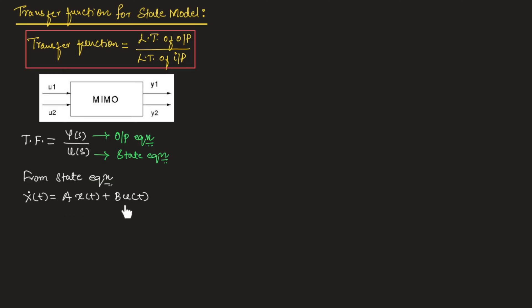If we take the Laplace transform of this equation, we can write S·X(S), since X-dot(T) is the differentiation of X(T), the Laplace transform will be S·X(S). That will be equal to A·X(S) + B·U(S). Let us take this as equation number 1.